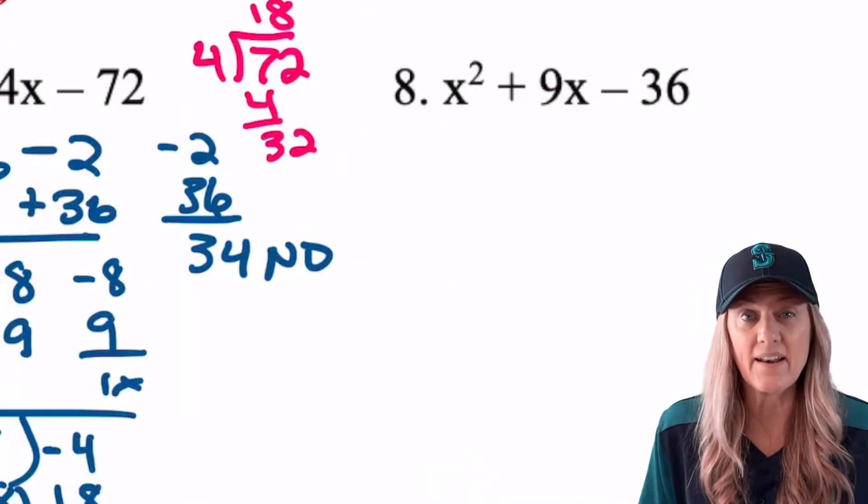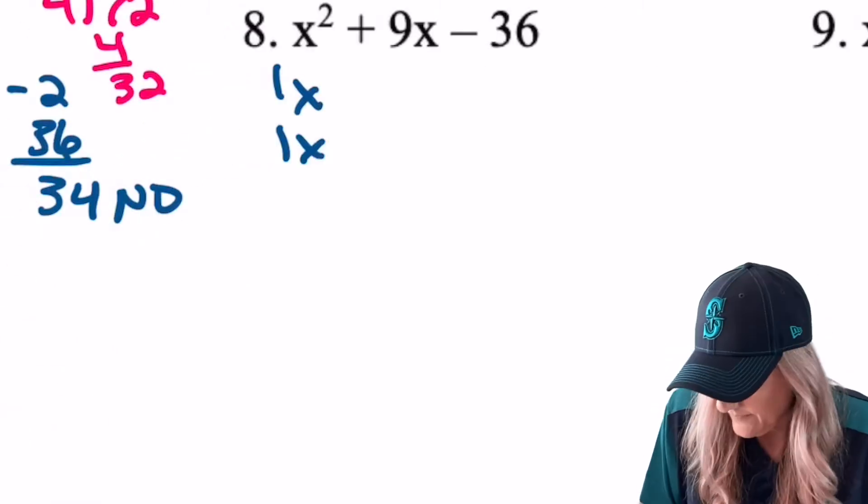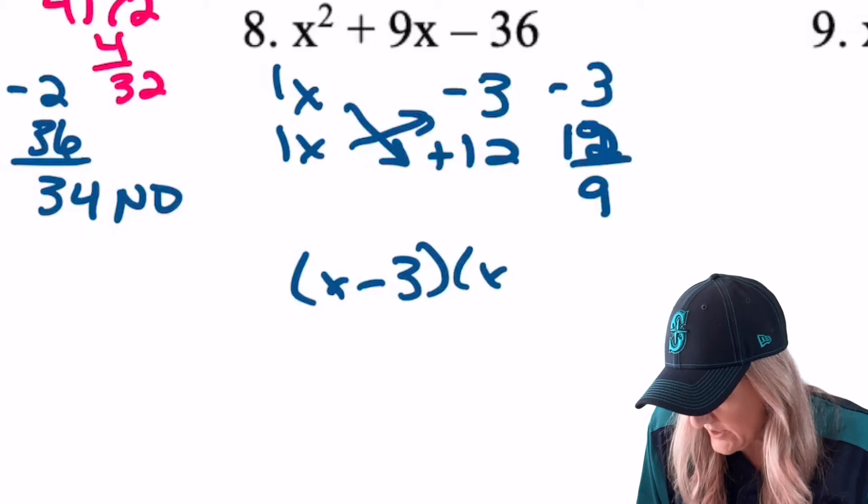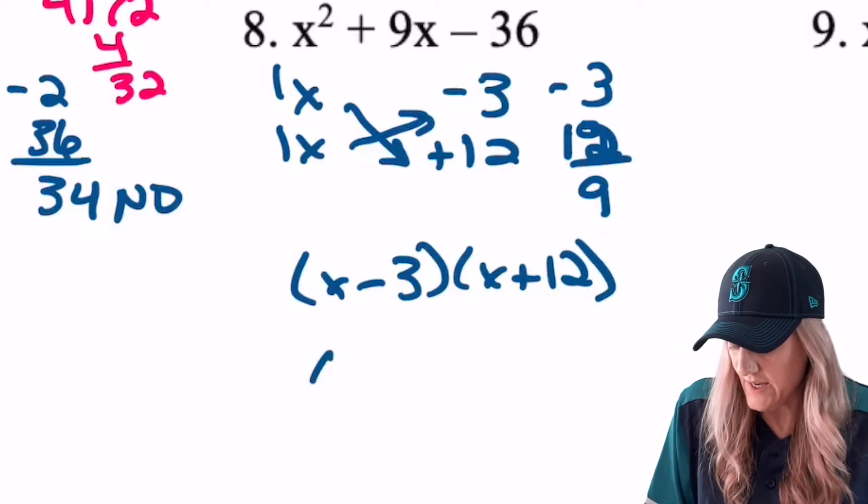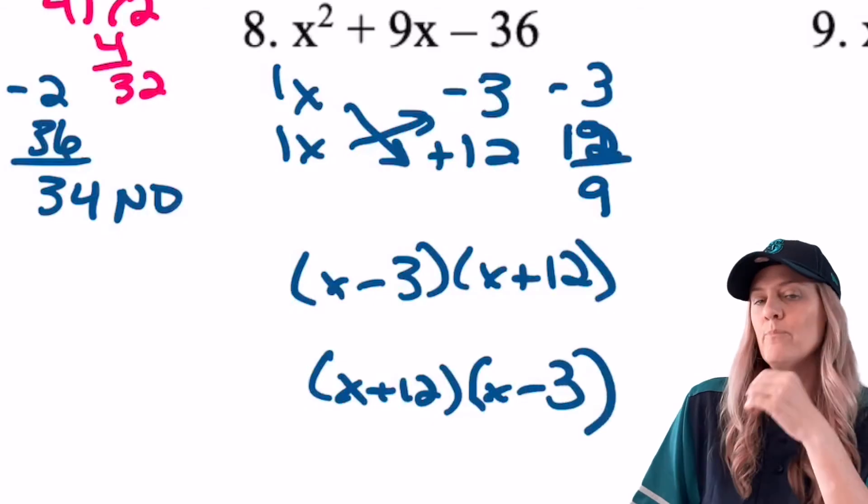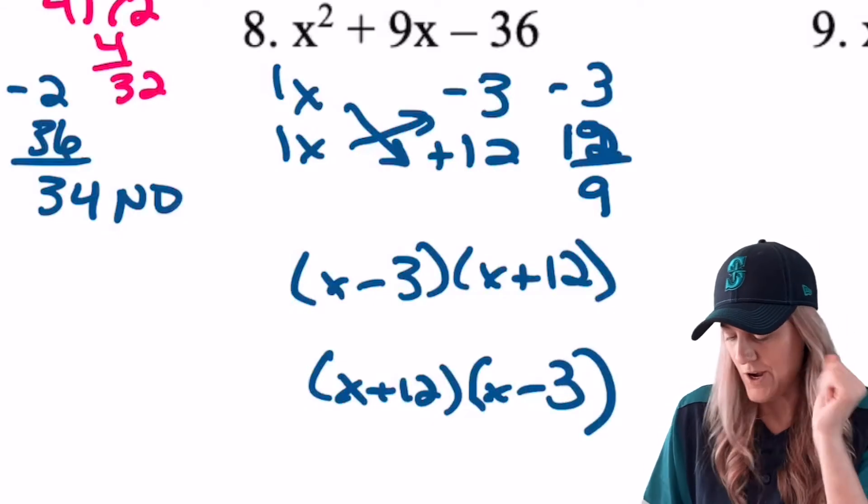Look at the next one. What do you think? Can you do it faster than I can do it? Let's race. X minus 3, X plus 12. And it could be written as x plus 12, X minus 3. Now, don't say you beat me if you started before I started though.